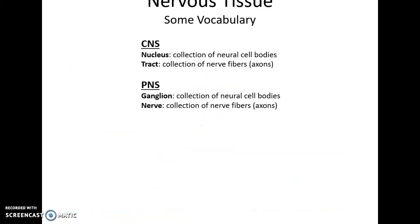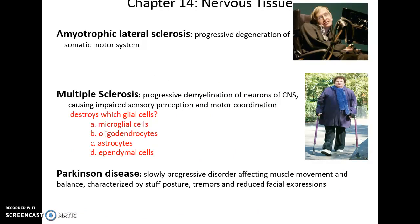Disorders associated with nervous tissue include amyotrophic lateral sclerosis (ALS or Lou Gehrig's disease), which leads to progressive degeneration of the somatic motor system, causing muscle atrophy and eventually death. Multiple sclerosis is a progressive demyelination of neurons in the central nervous system, impairing sensory perception and motor coordination by destroying oligodendrocytes. Parkinson's disease is a slowly progressive disorder affecting muscle movement and balance, characterized by stiff posture, tremors, reduced facial expressions, and cognitive issues.